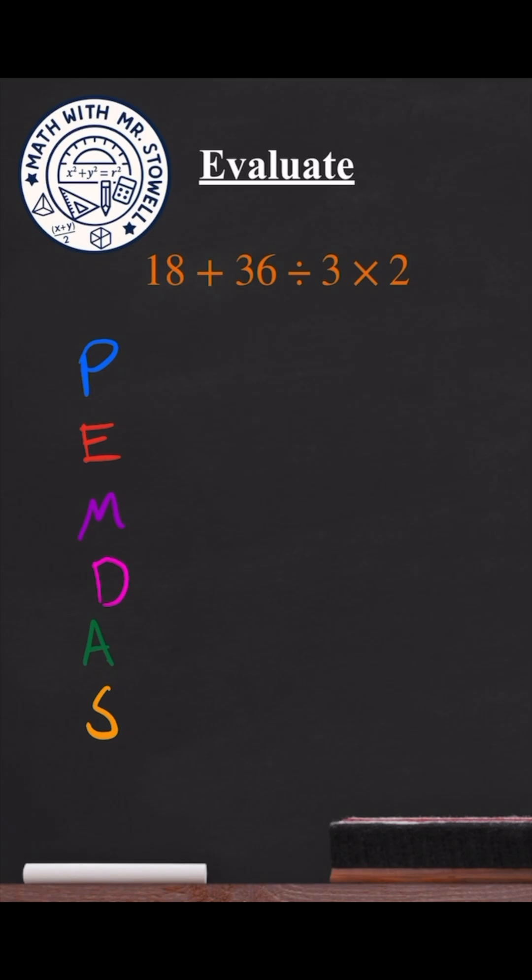One thing that a lot of people forget or get wrong is that the M and D are grouped together from whichever one goes left to right. Also, the addition and subtraction are grouped together, whichever one starts first from left to right.